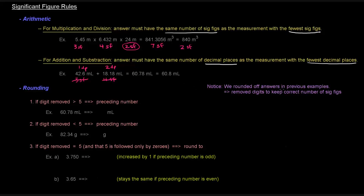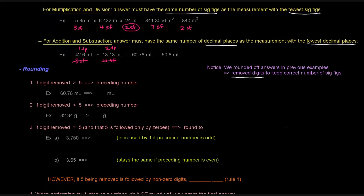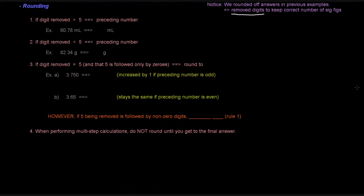Now let's cover the rounding rules. Rule one: if the digit you're removing is greater than five, increase the preceding number by one. For example, rounding 60.78 to three sig figs — you remove the 8, which is greater than five, so the 7 becomes 8, giving you 60.8 milliliters.